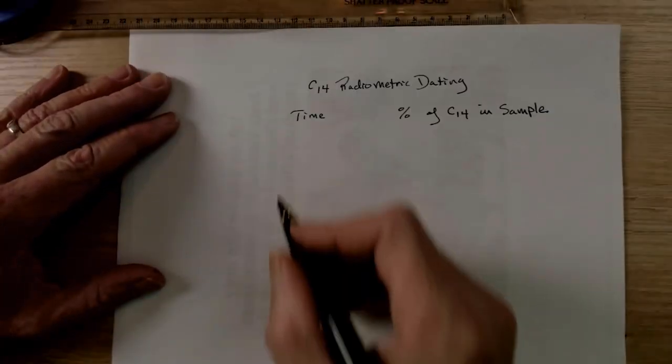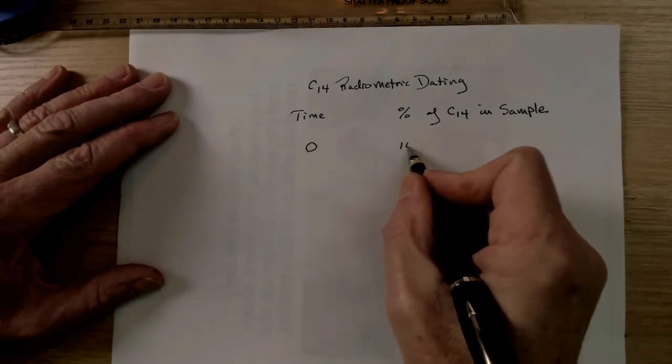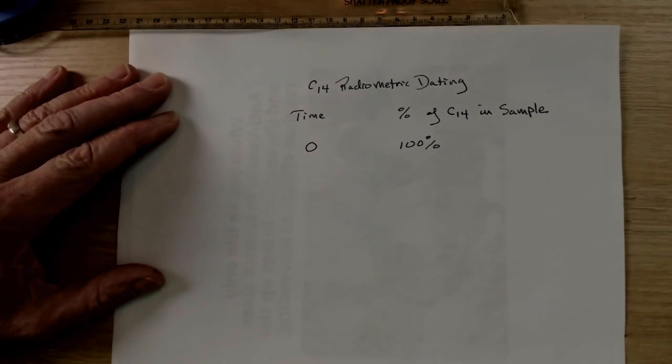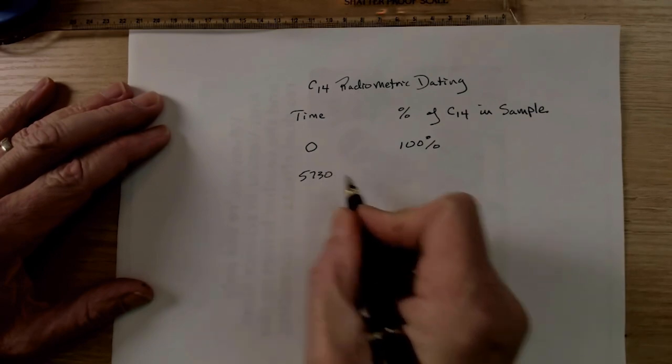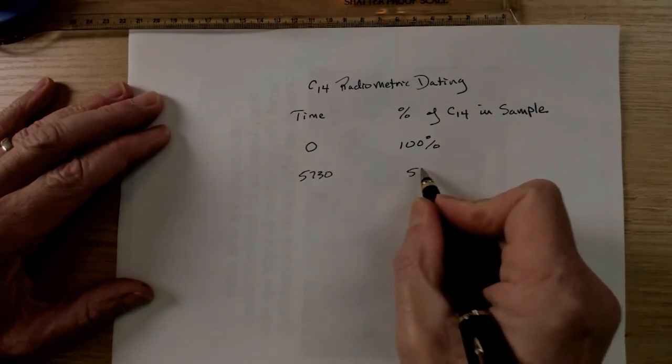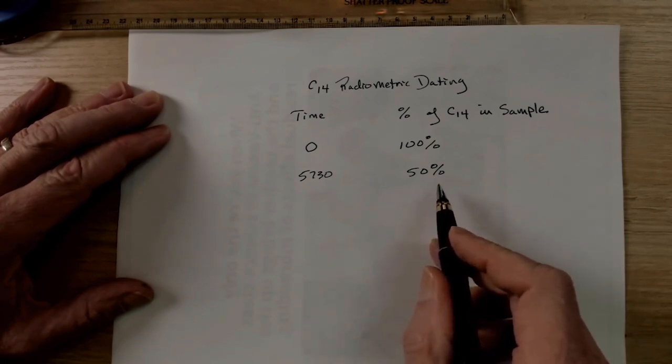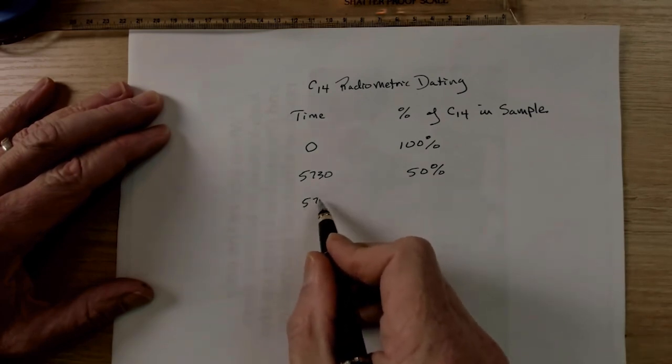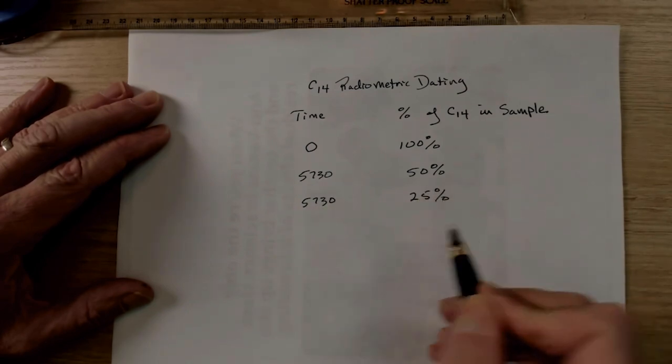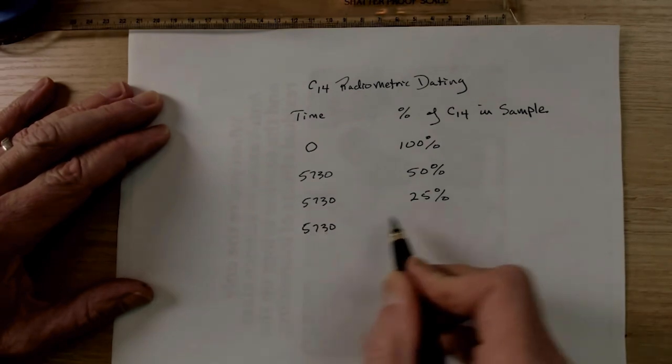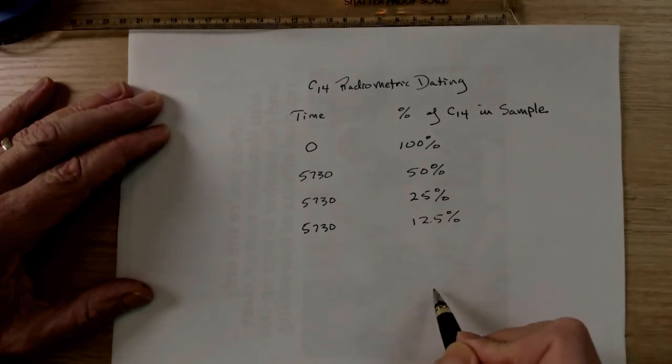Okay, so here's the basic principle behind it. At time zero, we have 100% of the carbon-14 in our sample. At 5,730 years, we're going to have 50%. That only leaves 50% to work with. So if we go another 5,730 years, we'll be down to 25%. We do another half-life, 5,730 years, we're at 12.5, and so on.